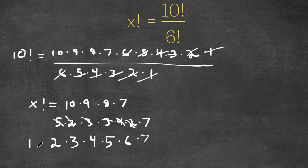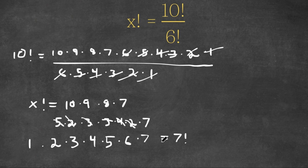We can think of 1 times this, because 1 times anything is itself. As you can see, this is equal to 7 factorial because it's 7 times 7 minus 1 times 7 minus 2, going on until 1. So this means that x is equal to 7.